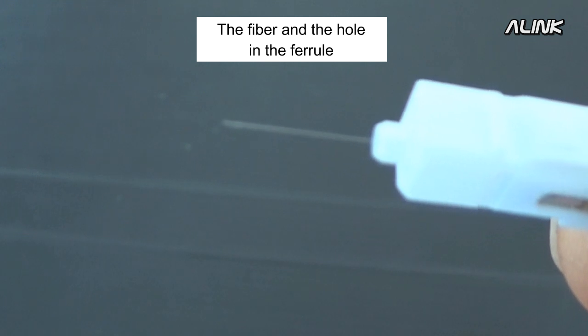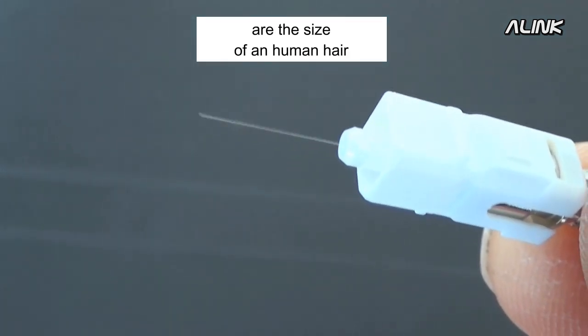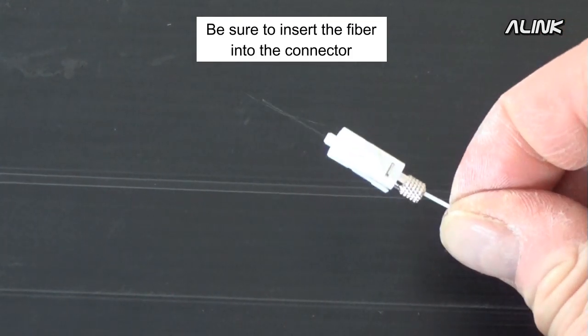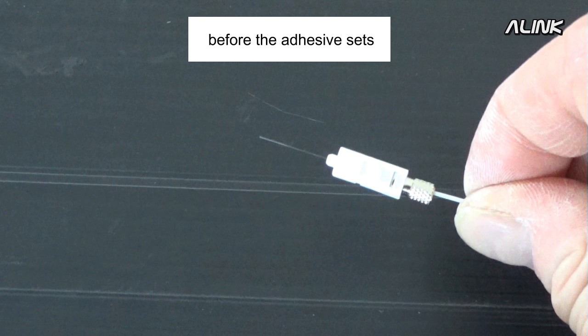The fiber and the hole in the ferrule are the size of a human hair. It could be not easy and it's easy to break the fiber. Be sure to insert the fiber into the connector before the adhesive sets.